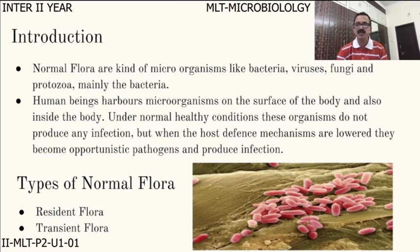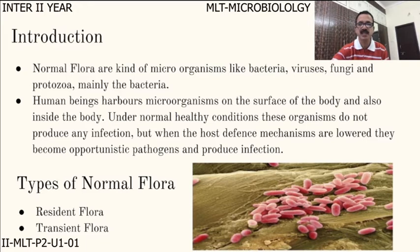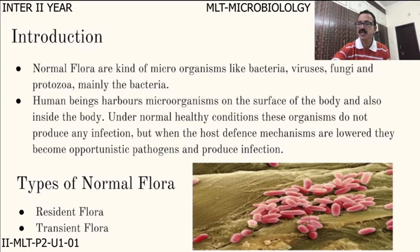Coming to the types, there are mainly two types of normal flora. Number one is the resident flora; second one is the transient flora. Resident flora are the microbes that are always present — though you remove them, they re-establish themselves. Transient flora are the microorganisms that are in or on your body for a period of time, then remove off or die off. Transient means temporary.